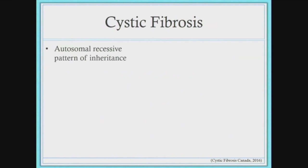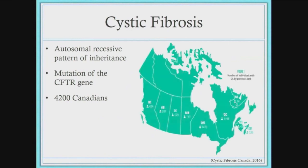CF, as many of you may not have been introduced to, is an autosomal recessive pattern of inheritance due to a mutation of the CFTR gene. About 4,200 Canadians are affected annually. In Ontario, that's about 1,473 individuals, of which about 885 adults are affected. My research concentrates on the adult CF clinic, and we actually have one here at McMaster on the fourth floor. CF is a multisystemic disease, meaning multiple different organs can contribute.